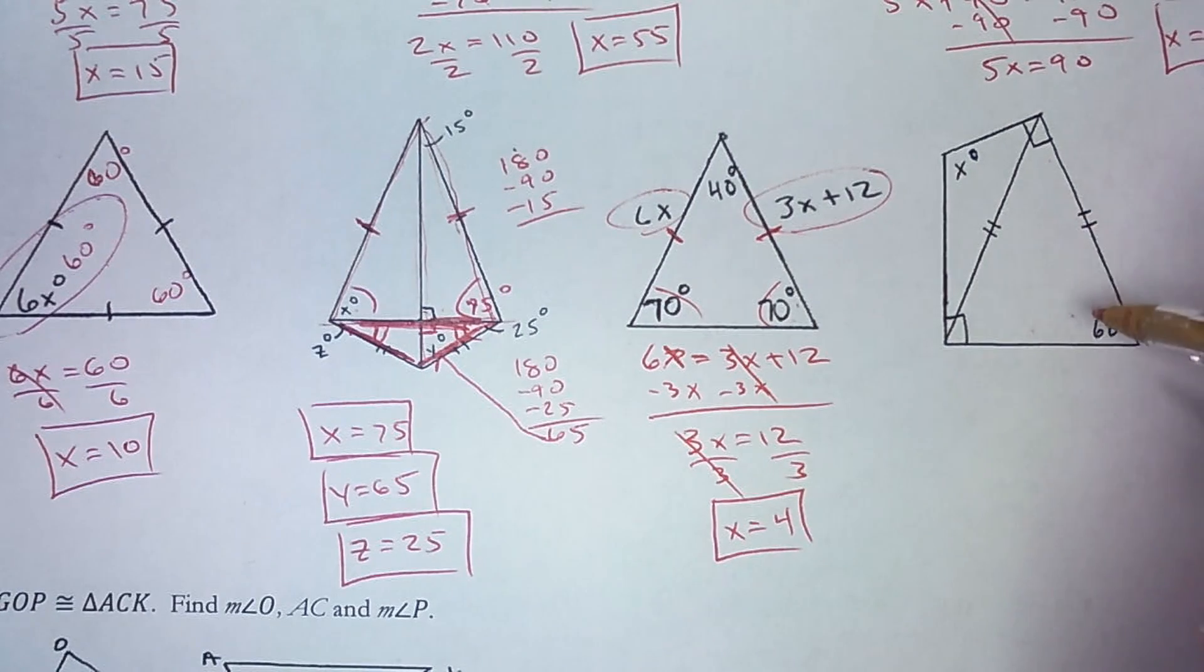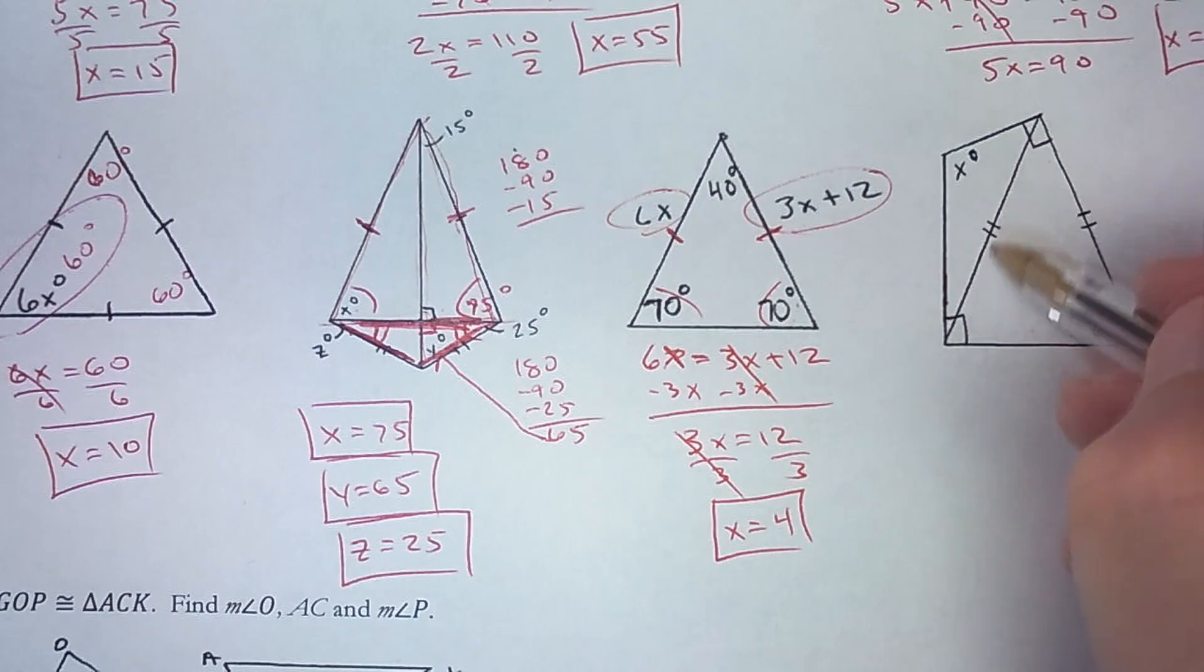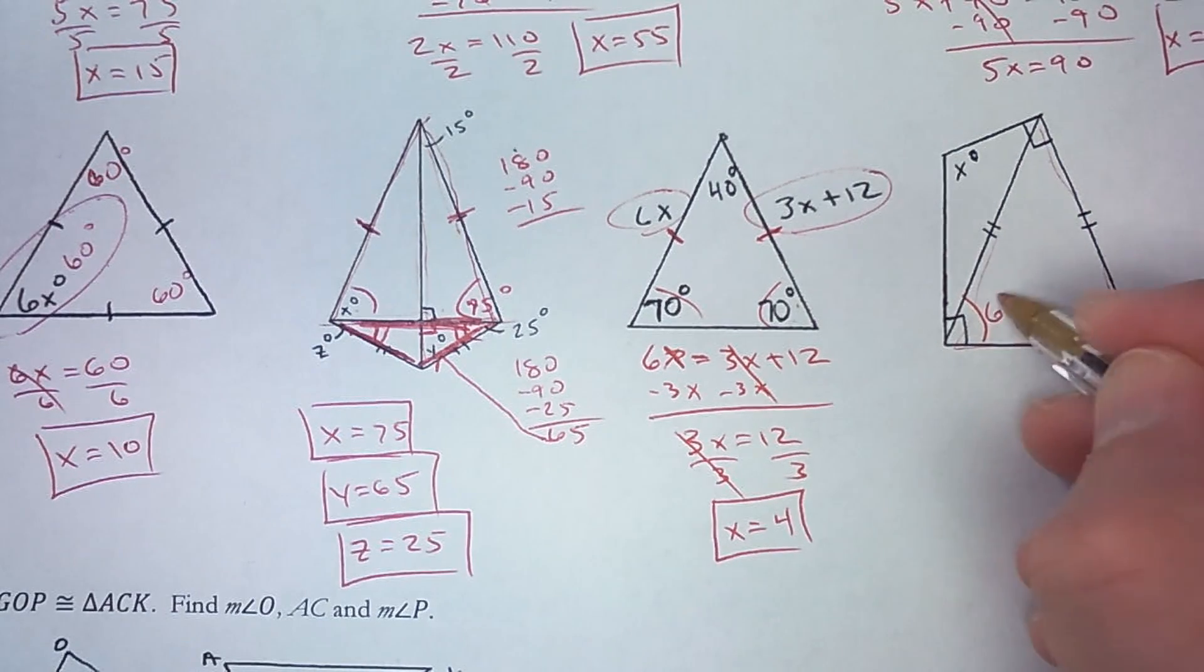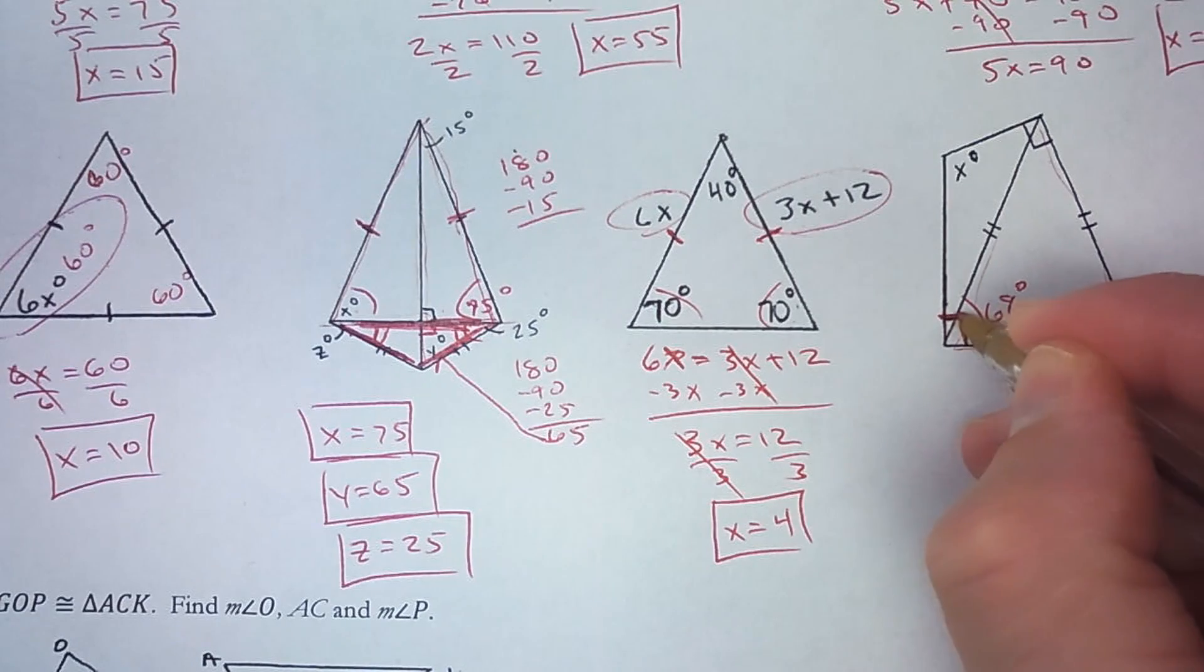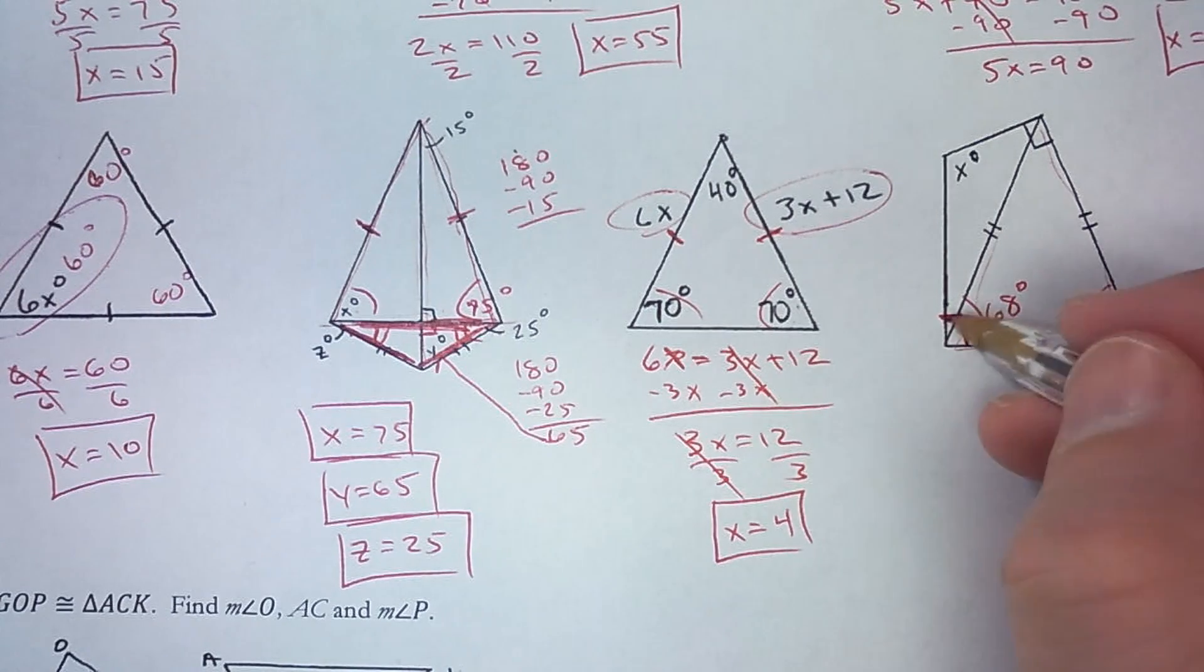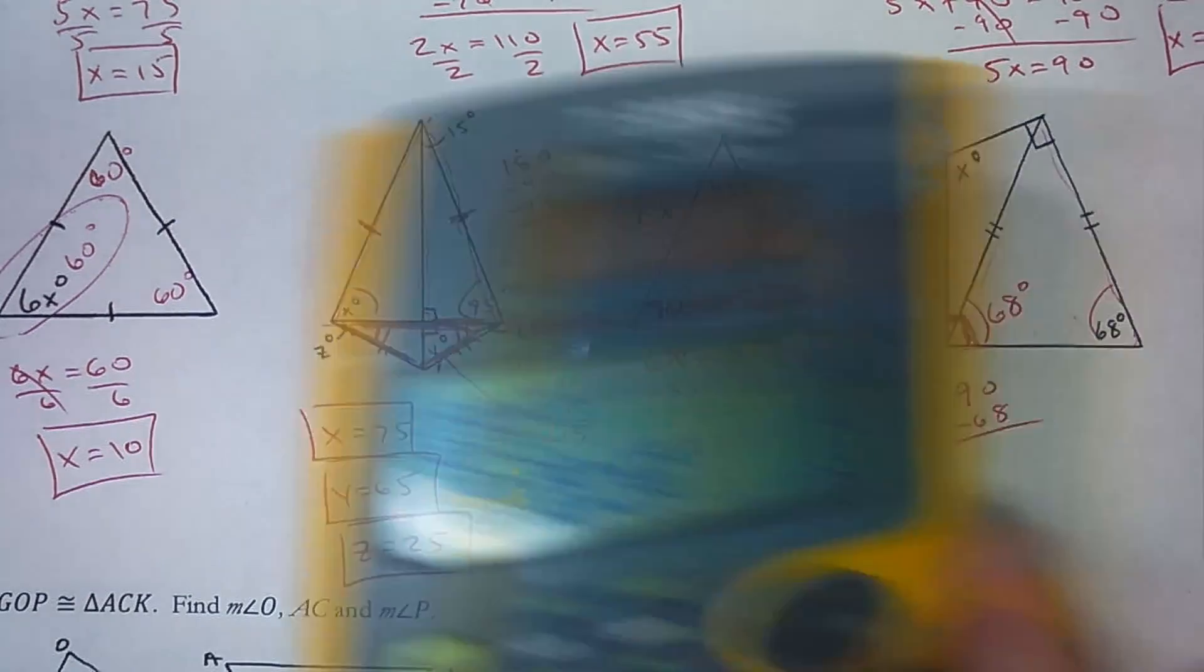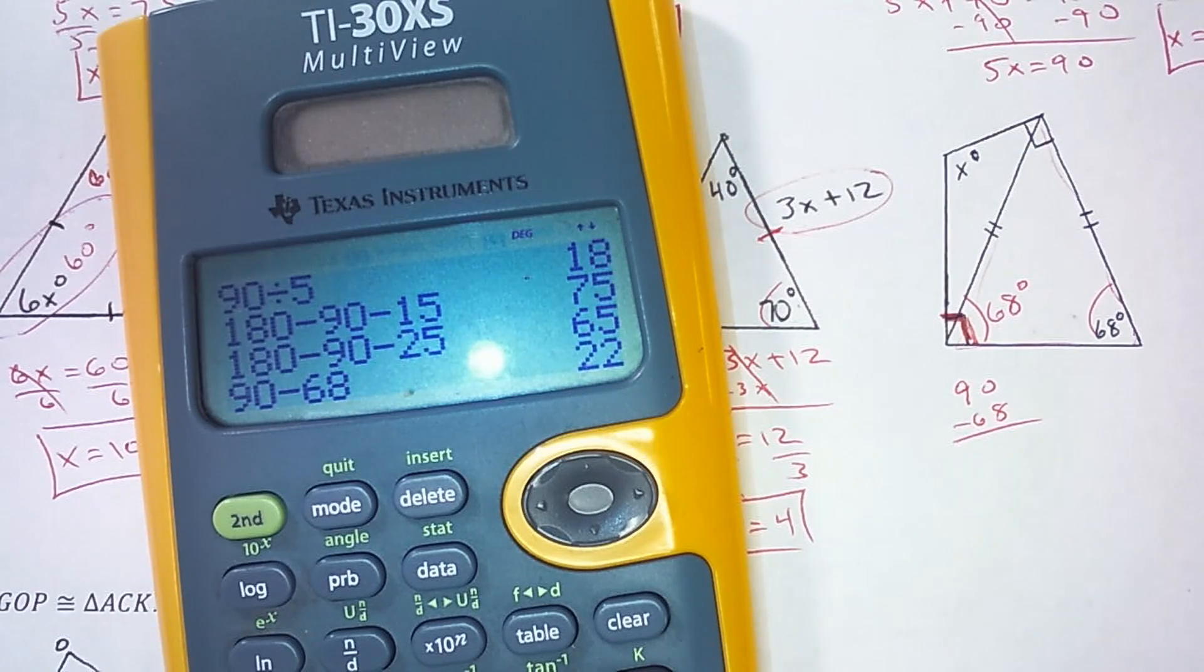And then our last triangle in this set up here. I've got an isosceles triangle here. So that tells me this is 68 degrees because these are congruent base angles. Now this says I've got 90 degrees right here. So if this is 90 degrees, and this is 68 of it, I can do 90 minus 68. And that's 22. So this is 22 degrees.